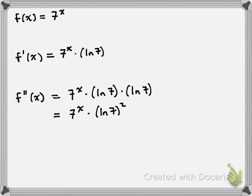Hopefully you can see the pattern: any time I take another derivative, I just add in another factor of the ln of 7, so the exponent on ln of 7 goes up by 1. Also notice that the exponent on ln of 7 matches the order of the derivative — the second derivative gave a power of 2, the first derivative had a power of 1. So for the nth derivative, we're going to have a power of n. The nth derivative of f of x is just 7 to the power of x multiplied by the ln of 7 to the power of n. So that's the derivative of an exponential function with a base of b. Hope it's been helpful, take care.